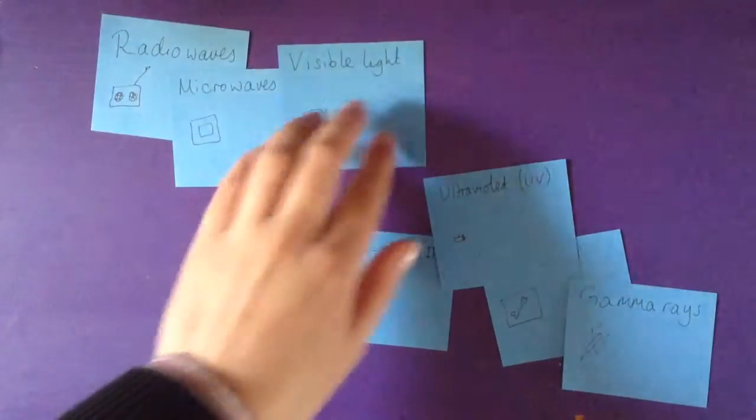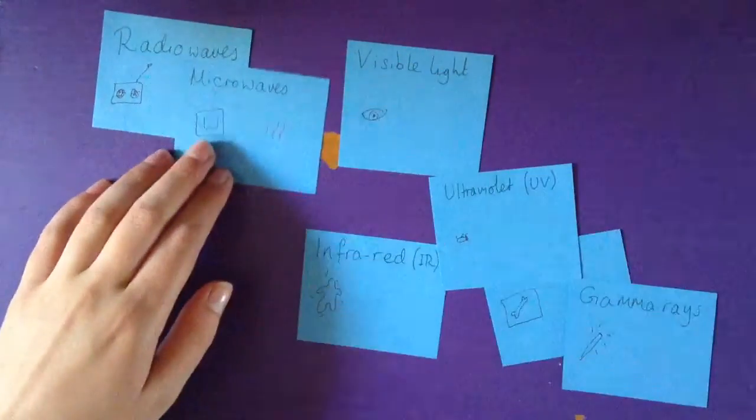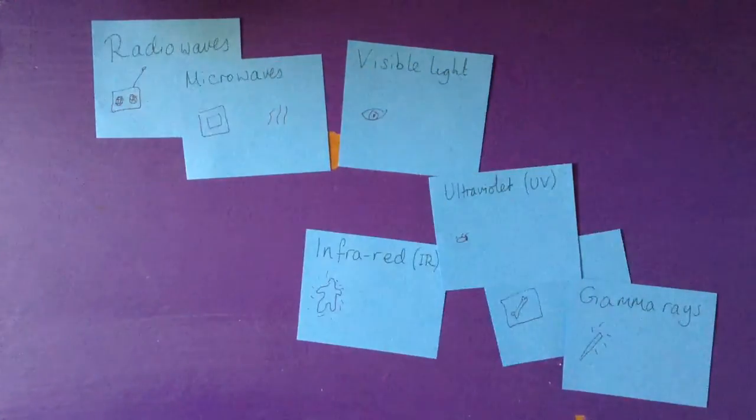Microwaves, the danger is they could cook us because they heat water up. And there is some speculation that the microwaves from mobile phones could be damaging to the brain, but there's not that much evidence for that.